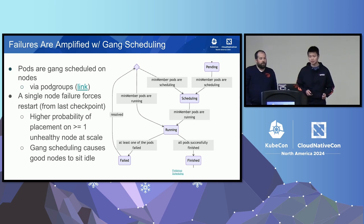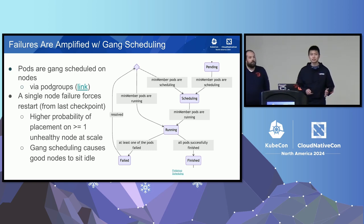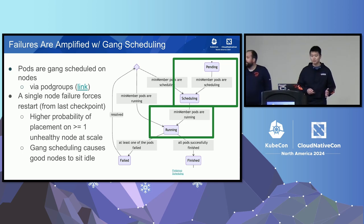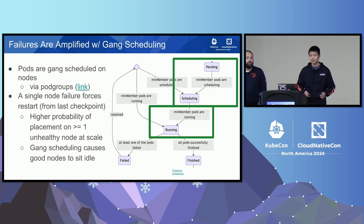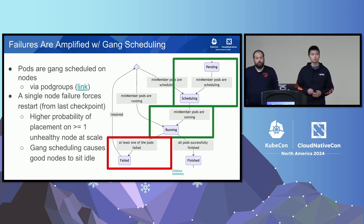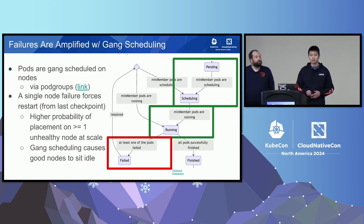At the Kubernetes level, pods are scheduled on multiple machines via pod group custom resource definitions, maintained by Kubernetes SIG. This is known as gang scheduling — it ensures the entire training workload starts simultaneously across all machines. A minimum number of pods need to be scheduled and running before the pod group as a whole can start. However, a single node failure forces a restart from the last saved checkpoint, and this problem gets especially bad with larger runs because there's a higher probability of placing a workload on at least one unhealthy node. During a restart, gang scheduling can leave unhealthy nodes idle, waiting for the bad machine to recover, leading to underutilization of GPUs, which is very expensive.